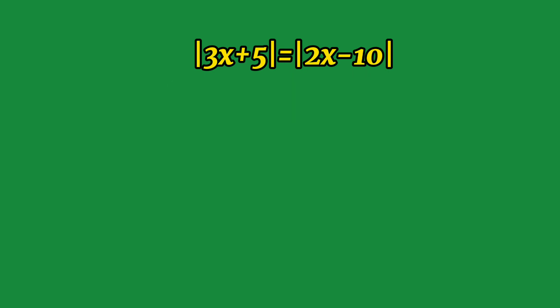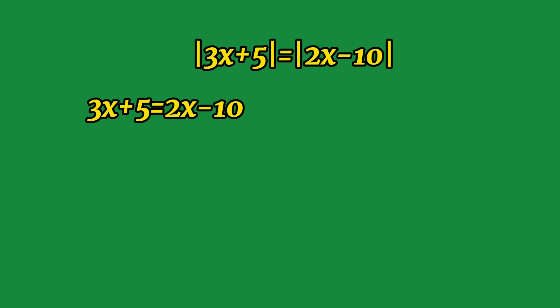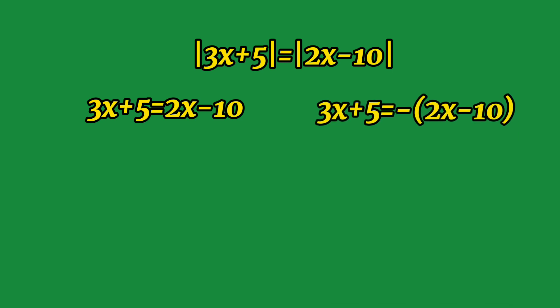So with this equation, we set up two cases: 3x + 5 = 2x - 10, and 3x + 5 = -(2x - 10). We can easily solve the values of x.